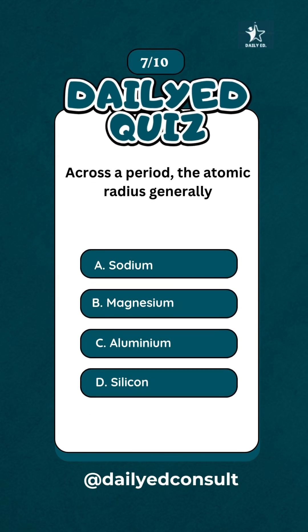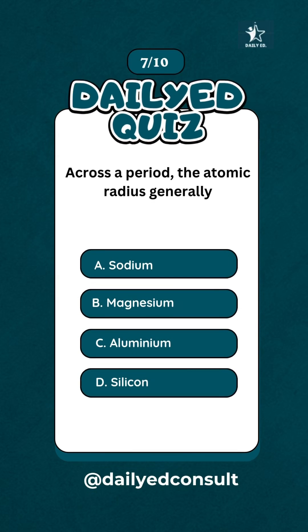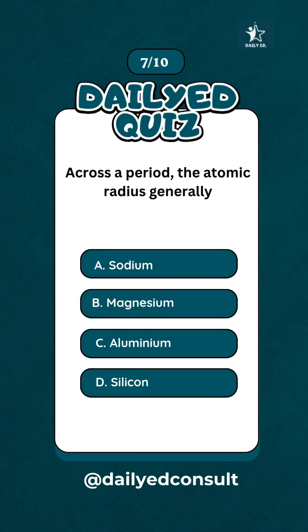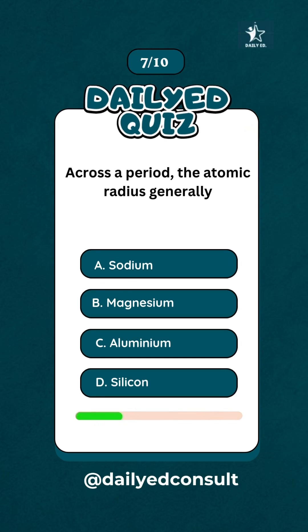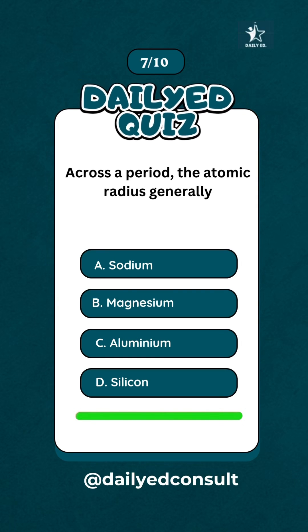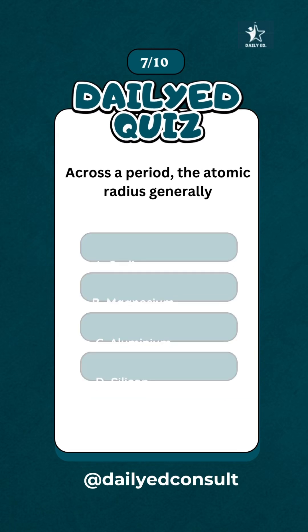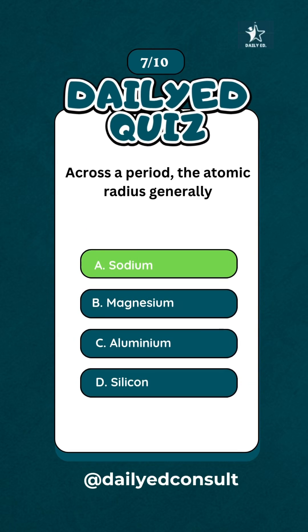The most metallic element in period 3 is... Sodium.